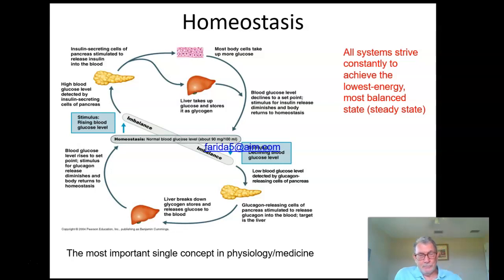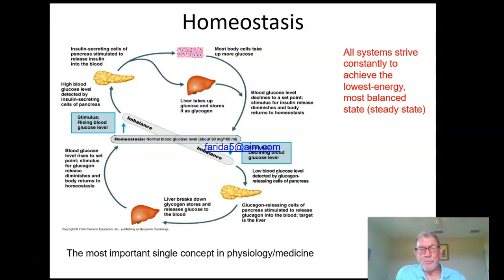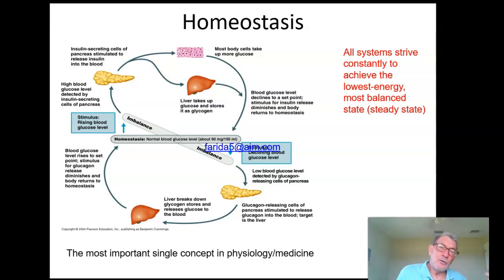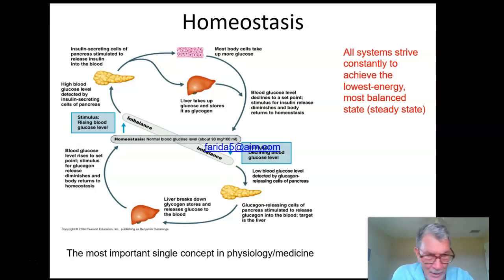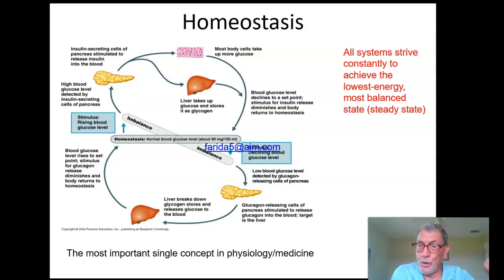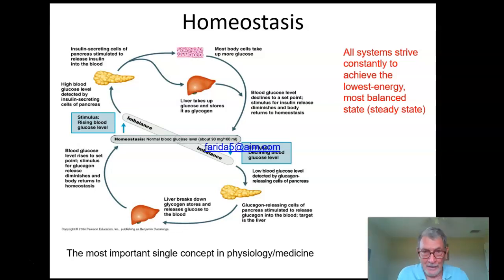One thing about your bodies and how these systems all work to regulate themselves is a desire of your body always to maintain homeostasis. Homeostasis is where everything is as neutral and natural as it can be — no energy is being wasted, your temperature is not too high or too low, your blood pressure is not too high or too low. You're trying to keep everything exactly where it needs to be across all of these different systems at the same time.